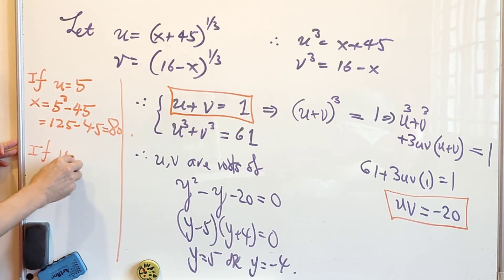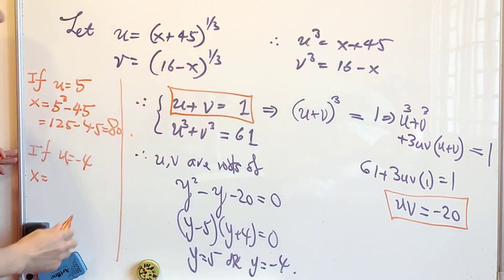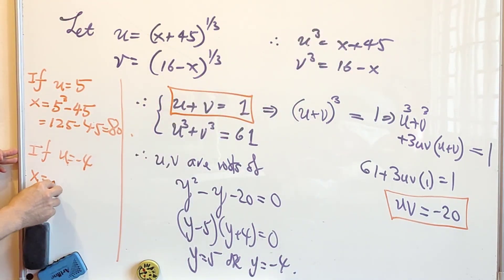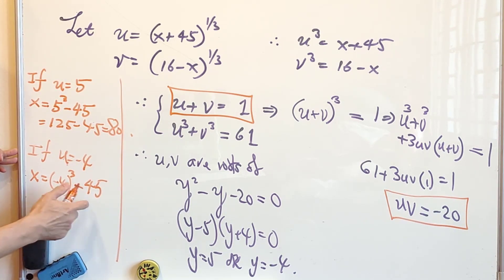If u equals to negative 4, then x is equal to u power 3 minus 45. That is negative 4 power 3 minus 45. So this is negative 64 minus 45, which is negative 109.